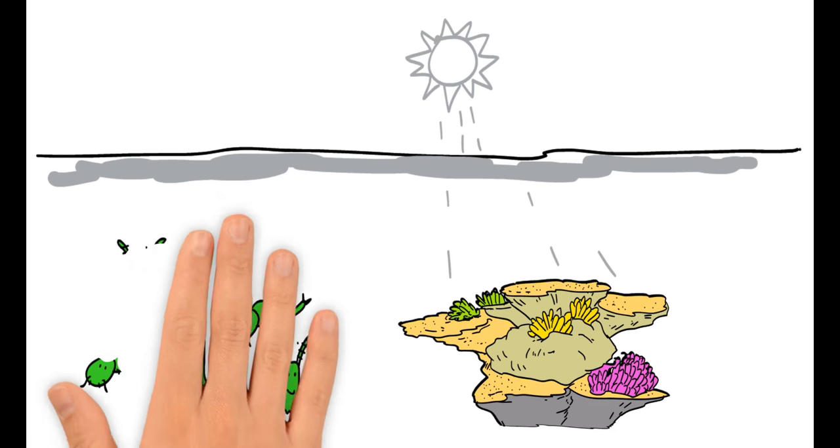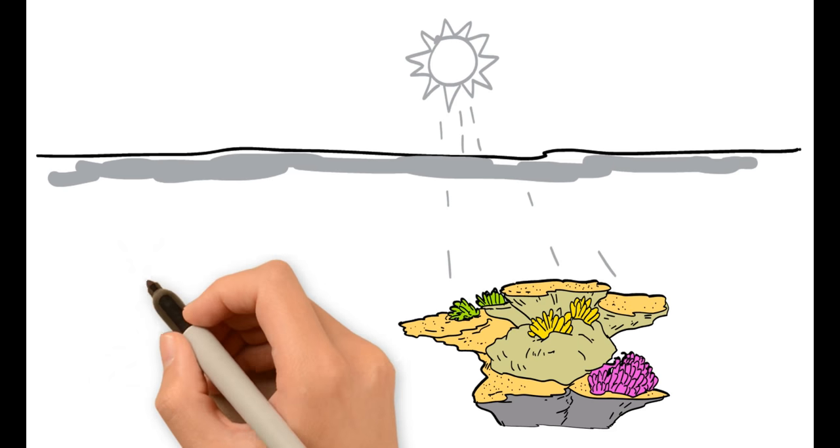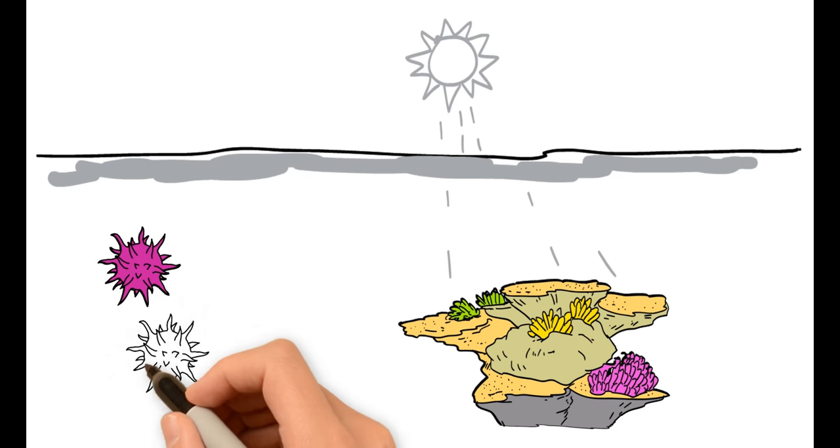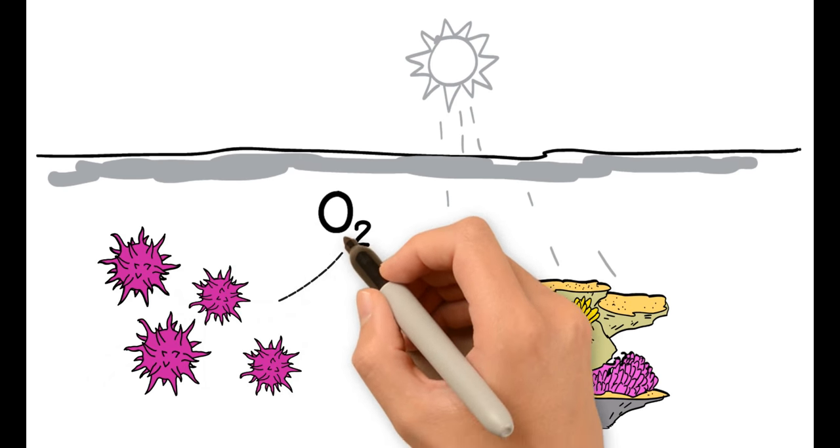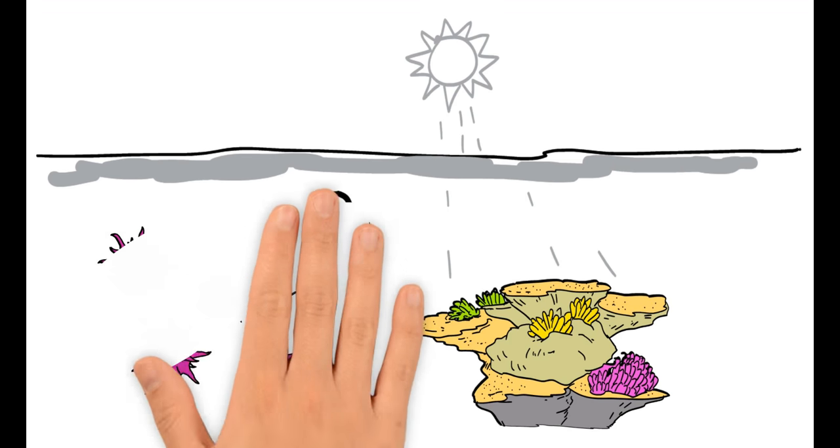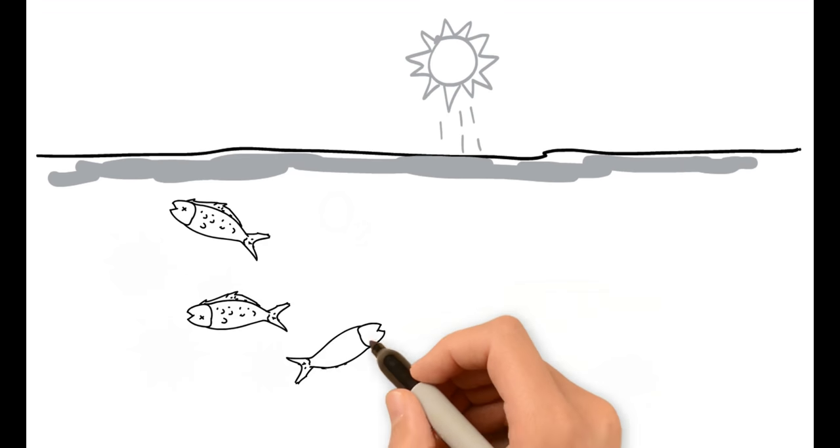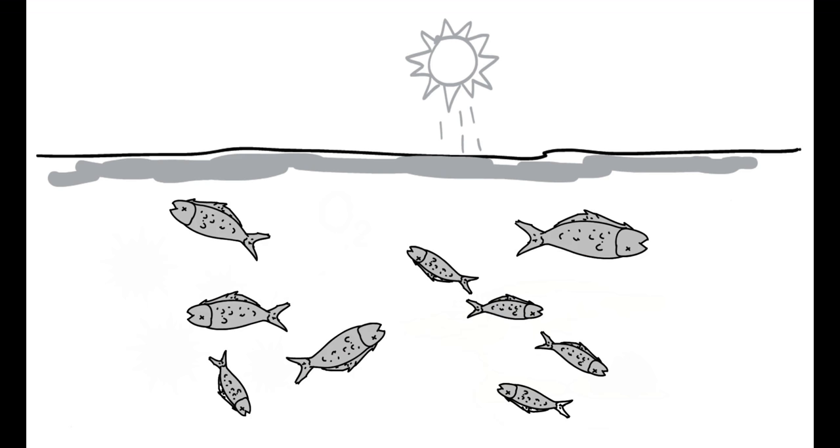Also, as the plankton decompose dead algae, the amount of bacteria increases. These bacteria use up oxygen, causing the oxygen concentration of the water to decrease to levels where some animals can no longer survive.